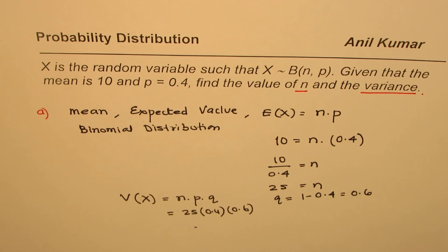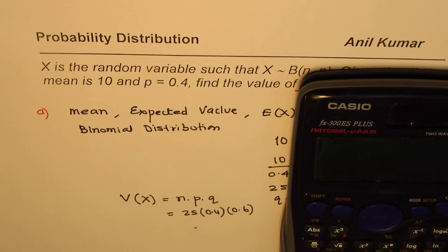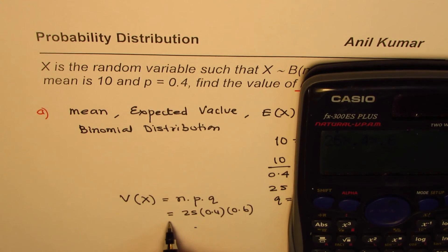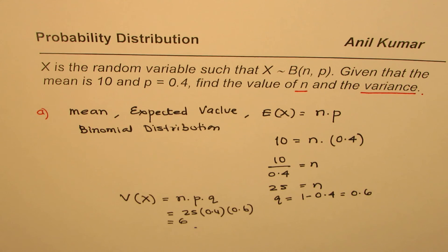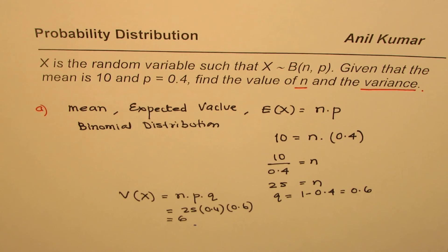So let's multiply them and get the answer. 25 times 0.4 times 0.6 equals 6. So the variance in this particular case is 6. That is how we calculate both values.